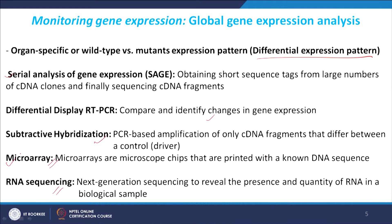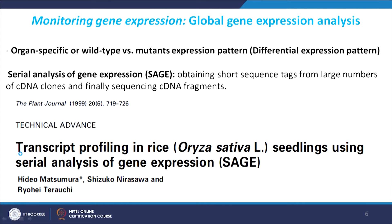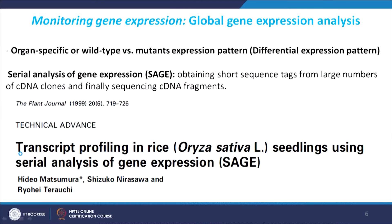So these are the different methods being used to study differential expression patterns in different conditions or developmental processes. Before going into microarray and RNA sequencing in detail, I will give some typical examples of different technologies which were used. For example, transcript profiling was done in rice seedlings using SAGE as a method, and people identified the differential expression there.